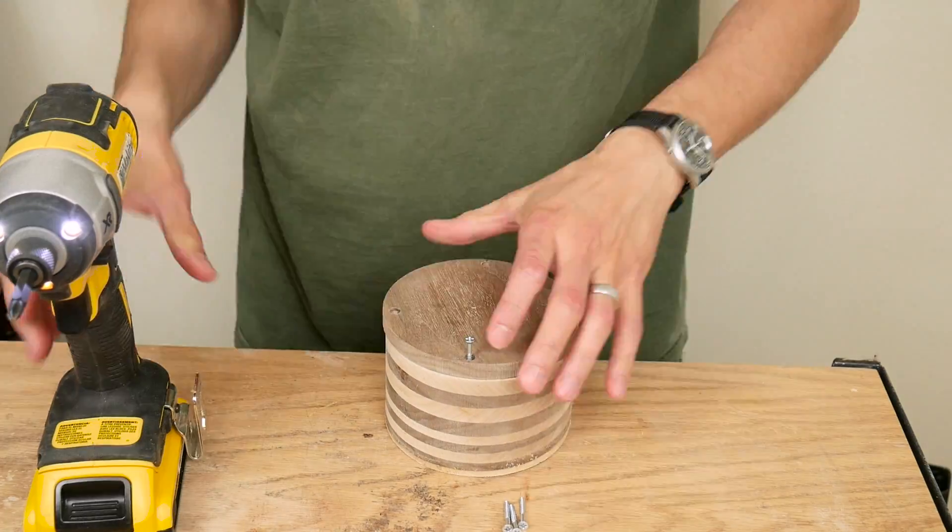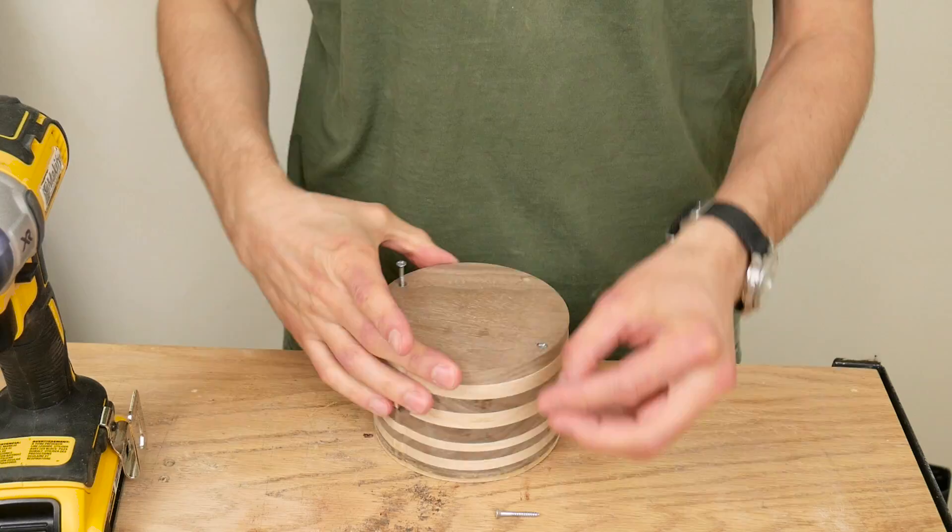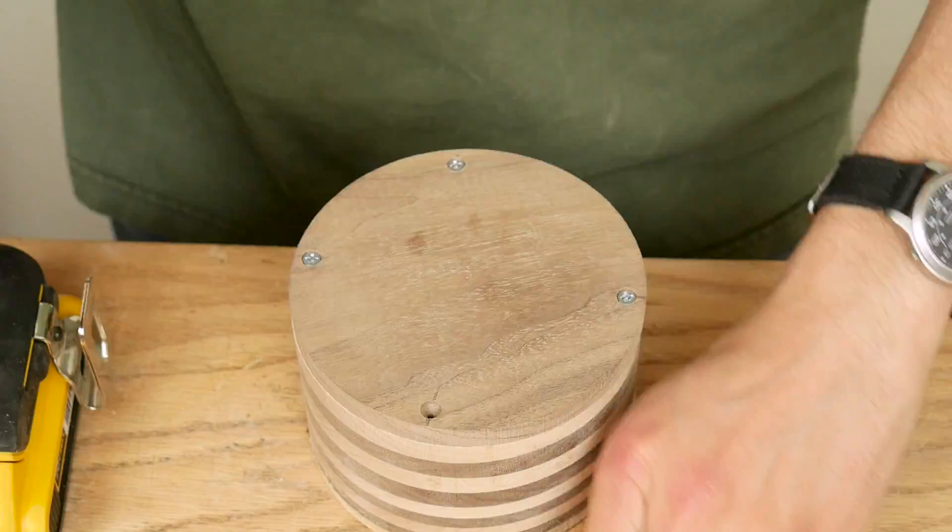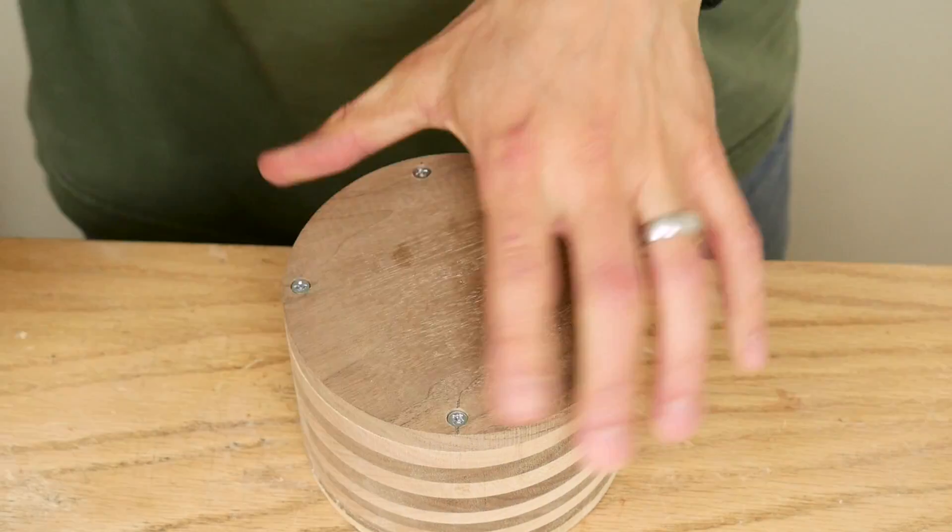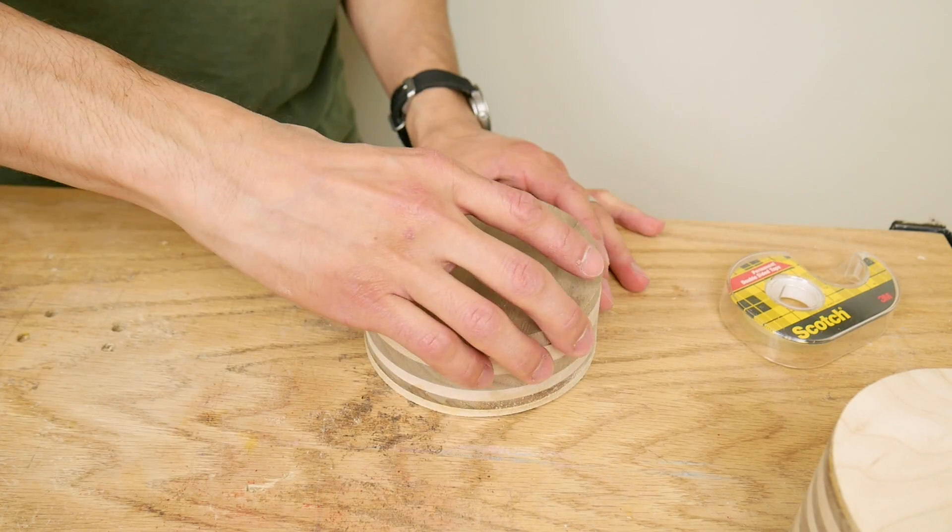I attached the bottom layer to the base of the lamp with one inch long number five wood screws and the holes I drilled earlier. And I temporarily attached the top layer of the top with double-sided tape.